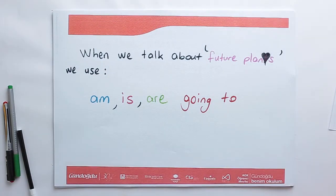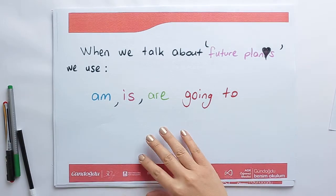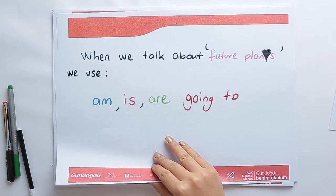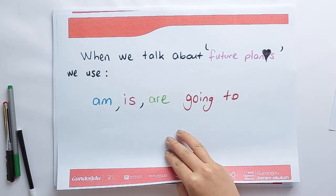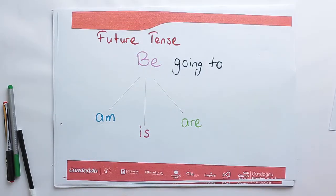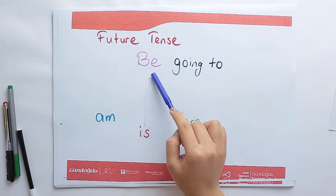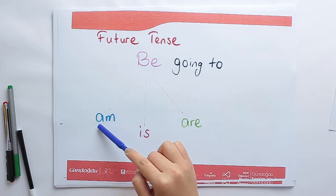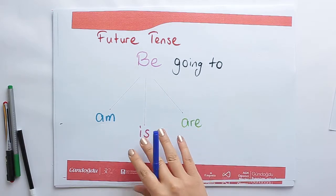When we talk about future plans, we use am, is, are and going to. For example: I am going to, he is going to, they are going to. Be is am, is, are as you know.